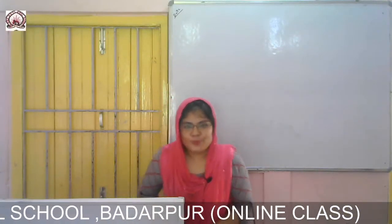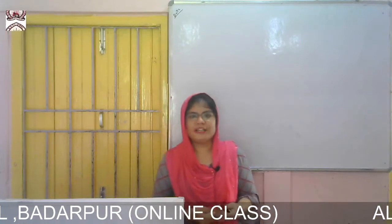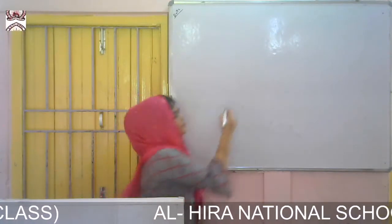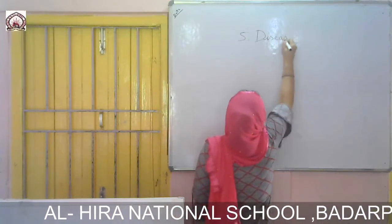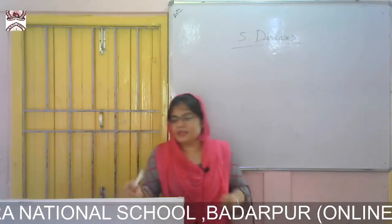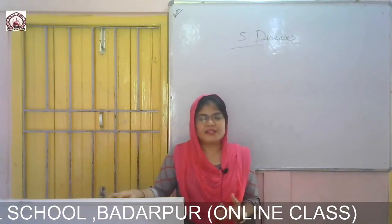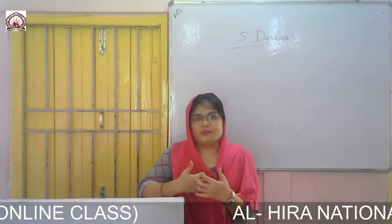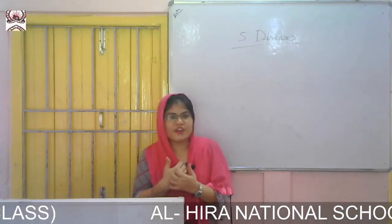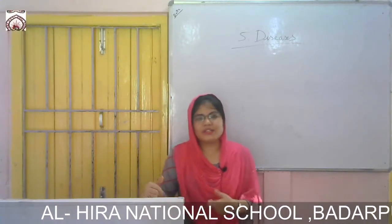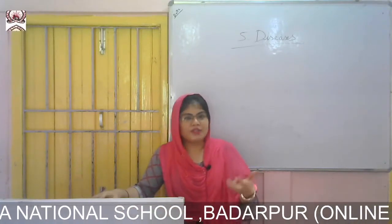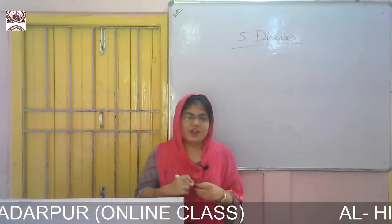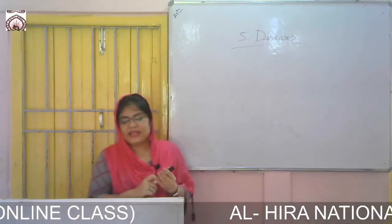Welcome to class. Today I'll be discussing Chapter 5: Diseases. A disease is an abnormal condition of a body part or organ. For example, rashes causing itchiness, ringworm, or kidney failure are all diseases. Diseases can also occur because of malnutrition — a lack of proper nutrition. Abnormality of a body caused by lack of nutrition is said to be a disease.